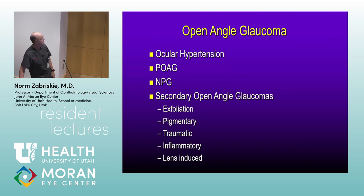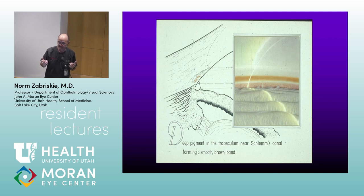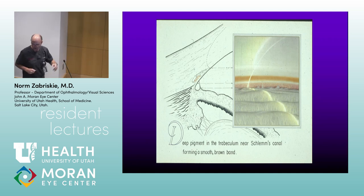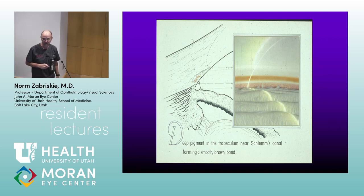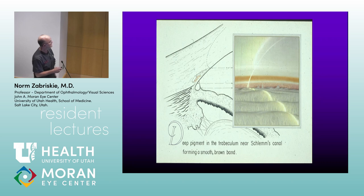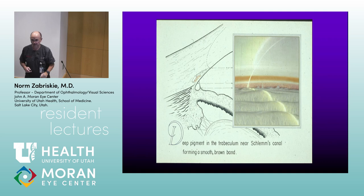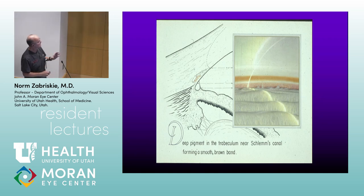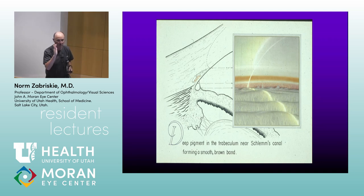Let's talk about analyzing data. With open angle glaucoma, by definition we have an open angle. Looking at this image of the angle structures — what is that structure showing? The corneal wedge: it's right where Descemet's membrane meets Schwalbe's line, essentially where the cornea ends and the endothelium terminates. That's such an important clinical sign. When you're doing gonioscopy, how do you go about finding the corneal wedge?